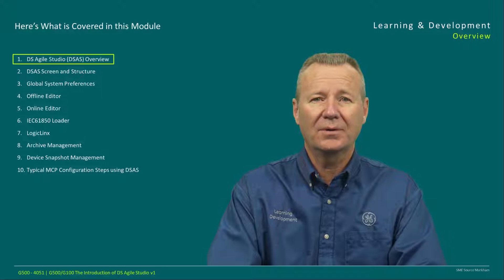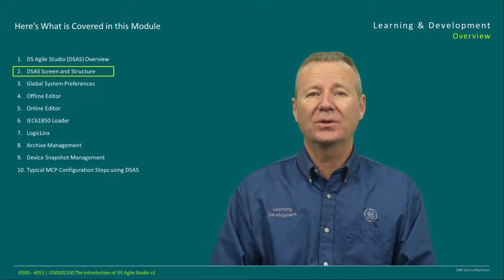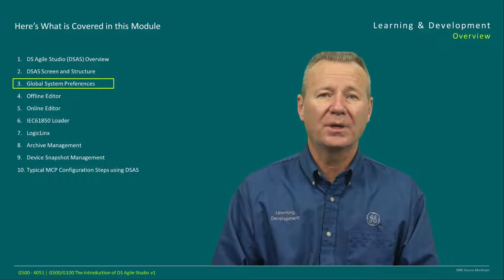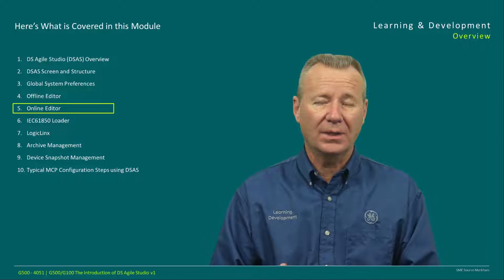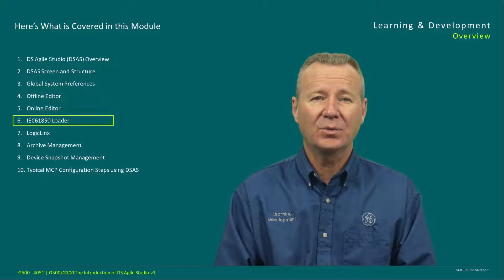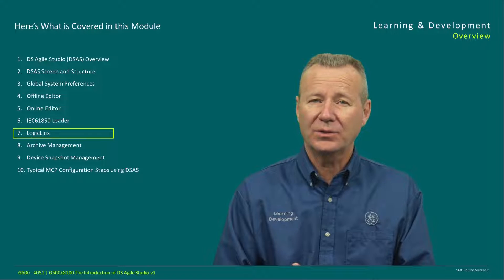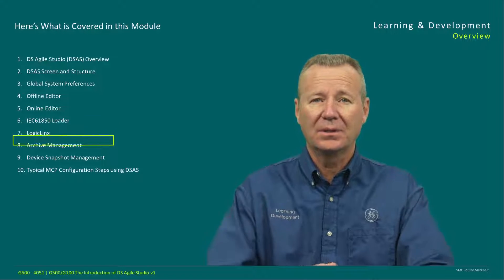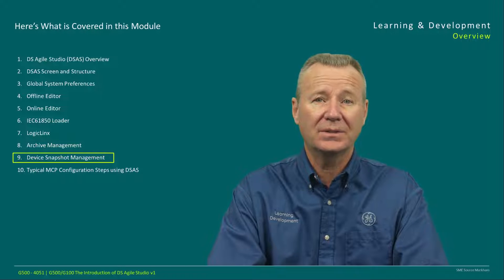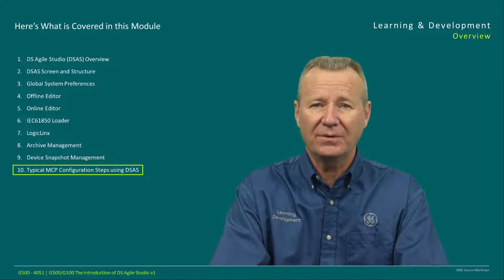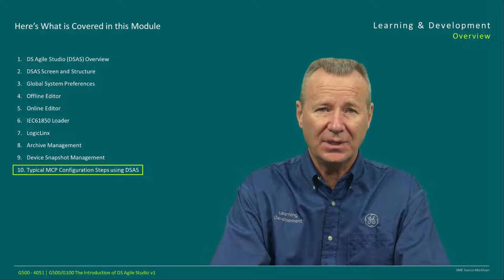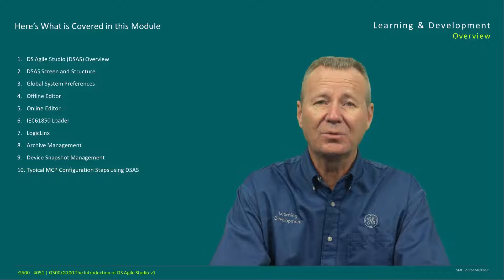In this video, we'll start off with an overview of the DS Agile Studio, then look at the screen and structure, followed by global system preferences. Next, we look at the offline editor, online editor, the IEC 61850 loader, logic links, archive management, device snapshot management, and lastly, typical MCP configuration steps using DSAS. Let's jump in and get started.